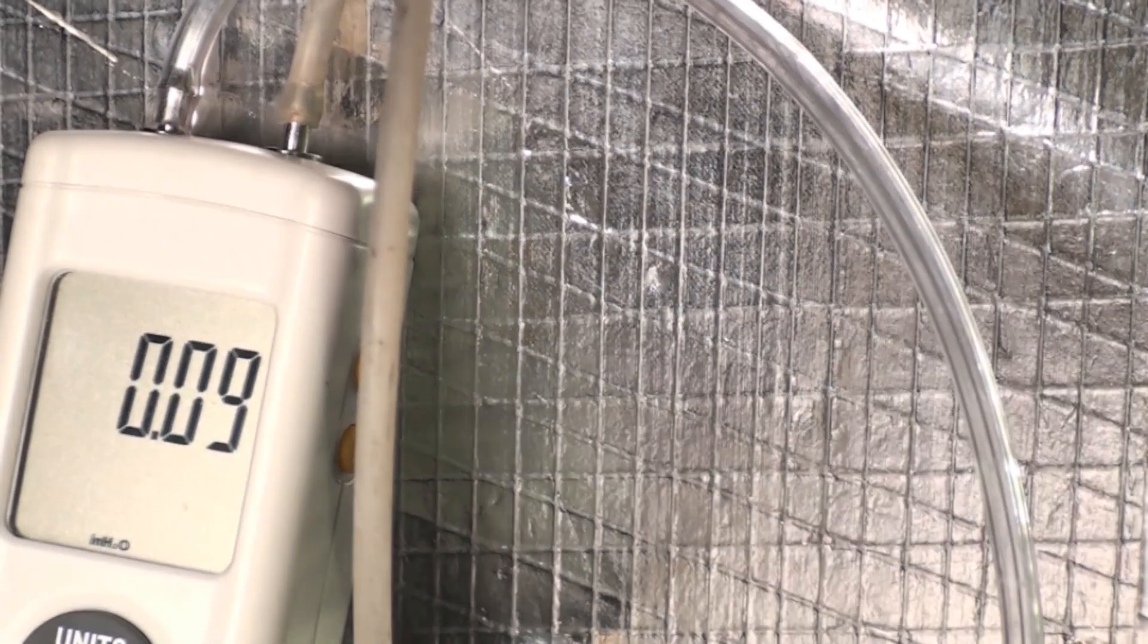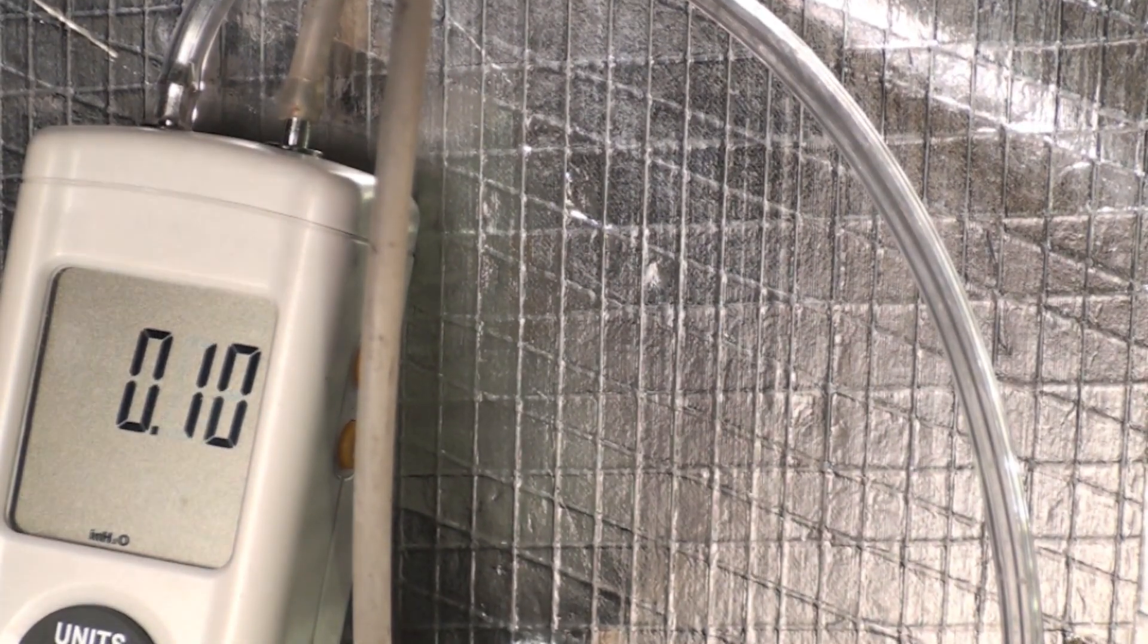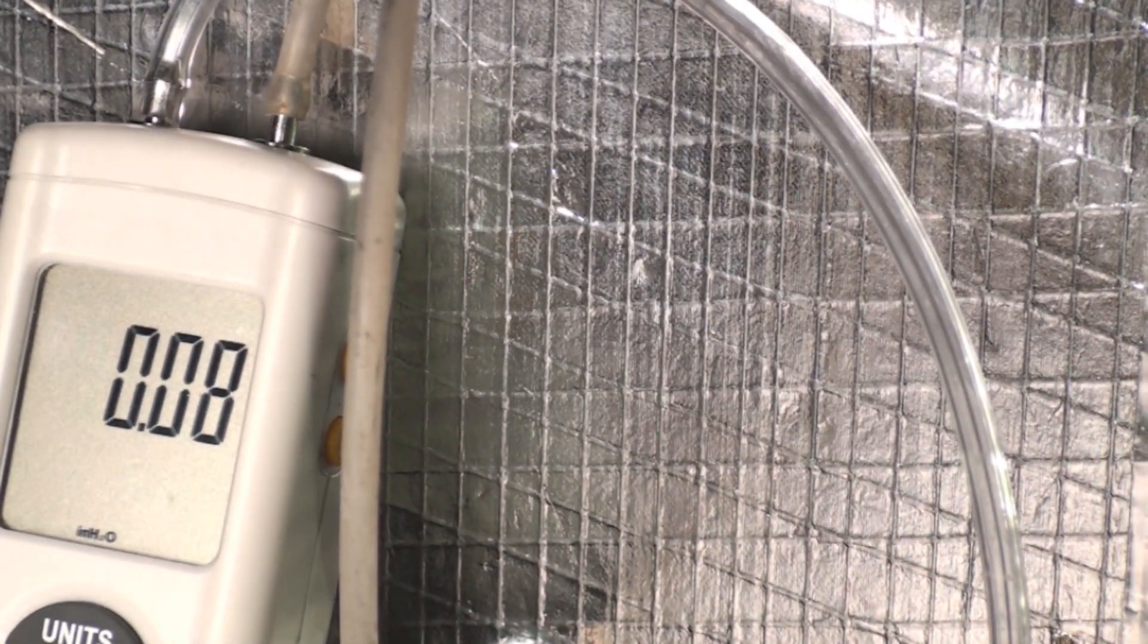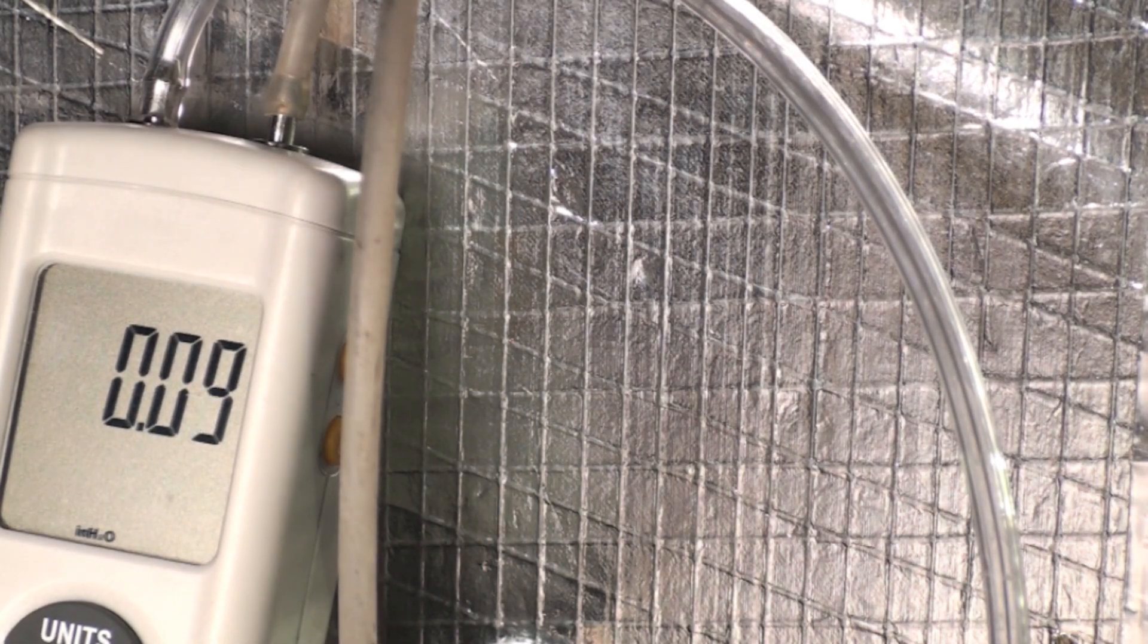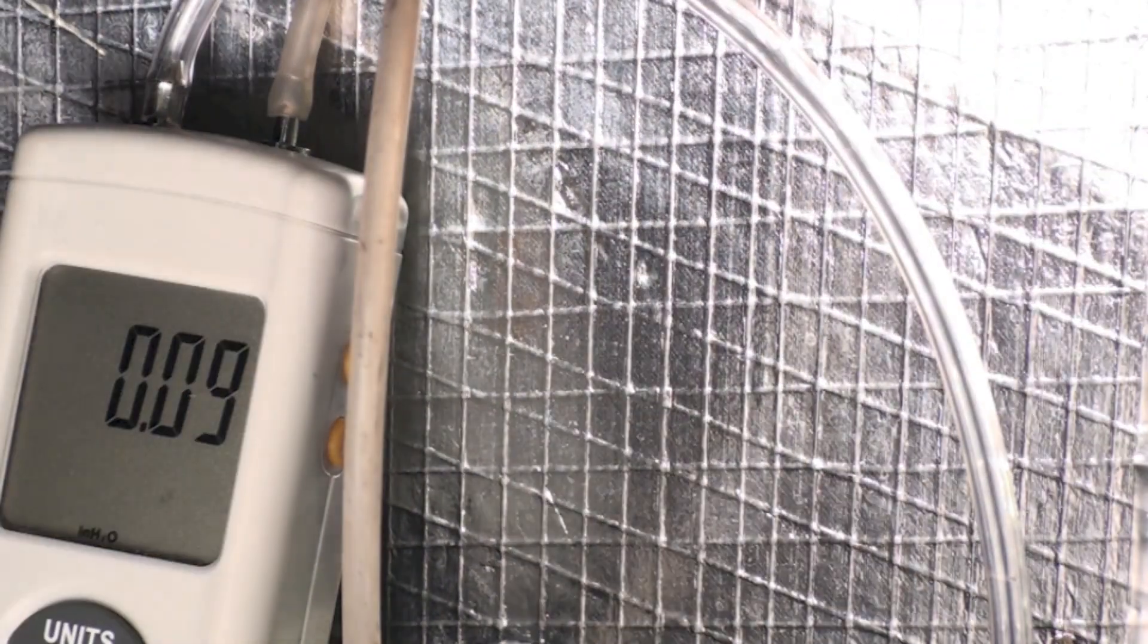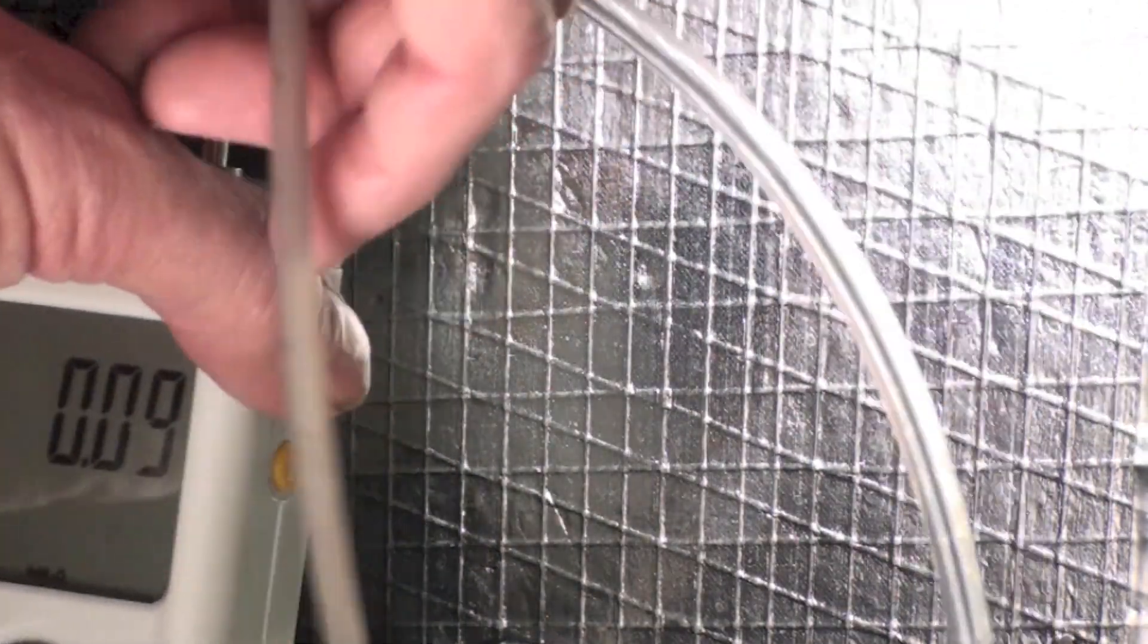So what we've done here is we have determined the drop across the filter with the two lines. When I had the one line just in the return, I'll show you that again.